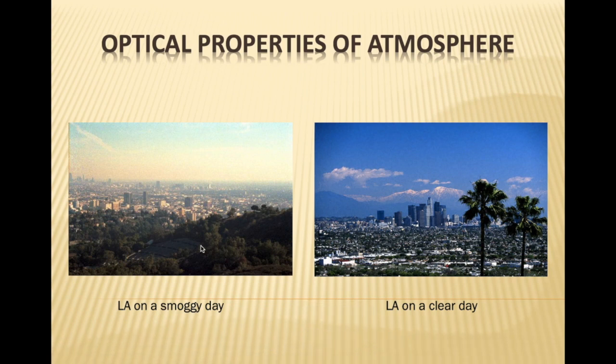Here we can see two pictures of Los Angeles — one of a smoggy day and one of a clear day. Visibility is high on the clear day while it is low on the smoggy day. The reason is the suspended particles in the atmosphere. Any particle suspended in the atmosphere can reflect, refract, or scatter light. These are aerosol particles — suspended solid or liquid particles in the atmosphere — which can attenuate light.